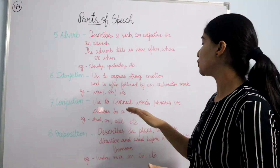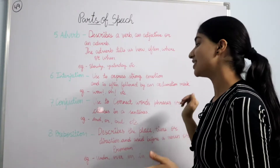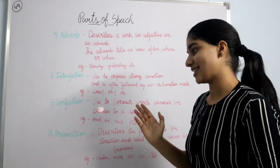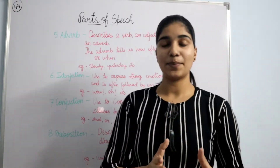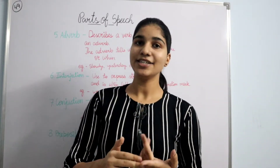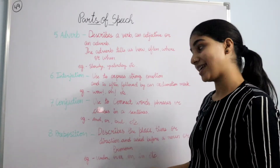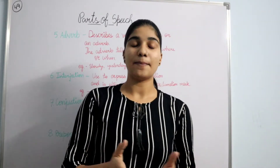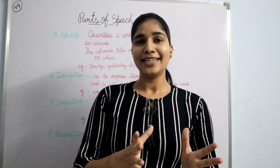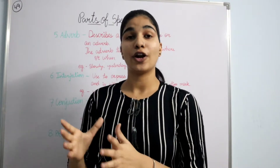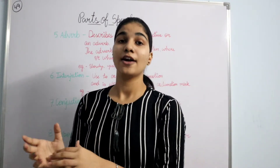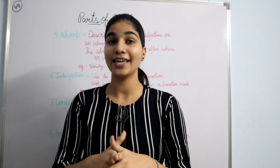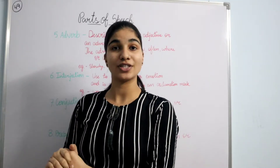Next we have conjunction. Conjunction is used to connect words, phrases, clause in a sentence. Examples are and, or, but, etc. For example: I like to go for a walk and I also like to listen to music.